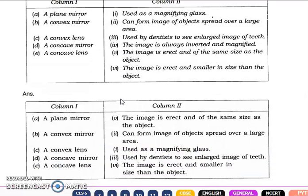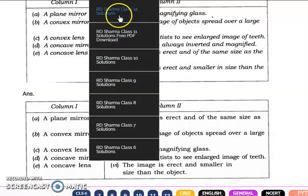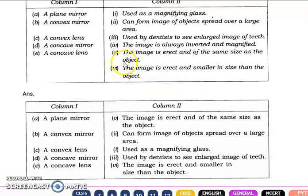A plane mirror - what is the property of plane mirror? If you search, you will see that the image is erect and of the same size as the object. Next is convex mirror - what is the property of convex mirror? Convex mirror can form image of objects spread over a large area.